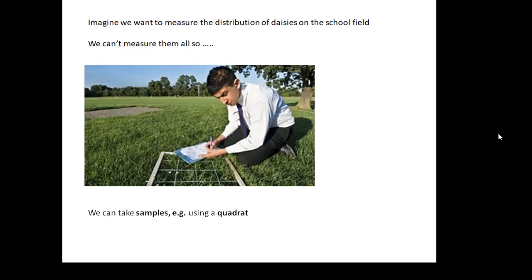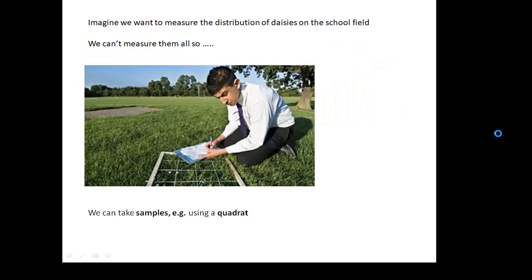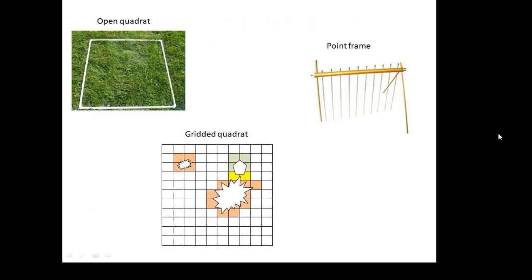A quadrat is basically just a square. Different types of quadrat. There's an open quadrat, a gridded quadrat, or a point frame. On that last photo, that's a gridded quadrat, that one there. Now, an open quadrat is typically 0.33 meters by 0.33 meters. So, that means it has an area of 0.1 meters squared.